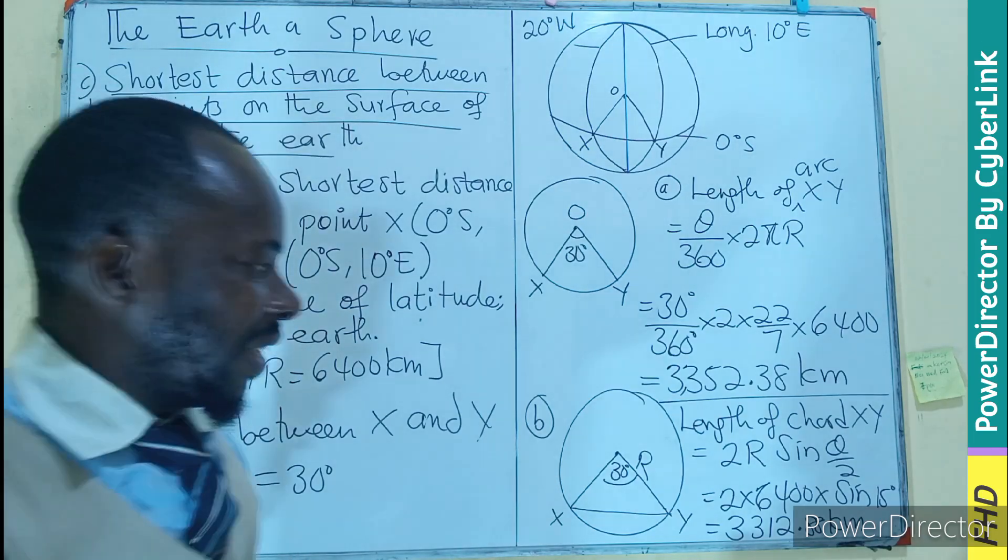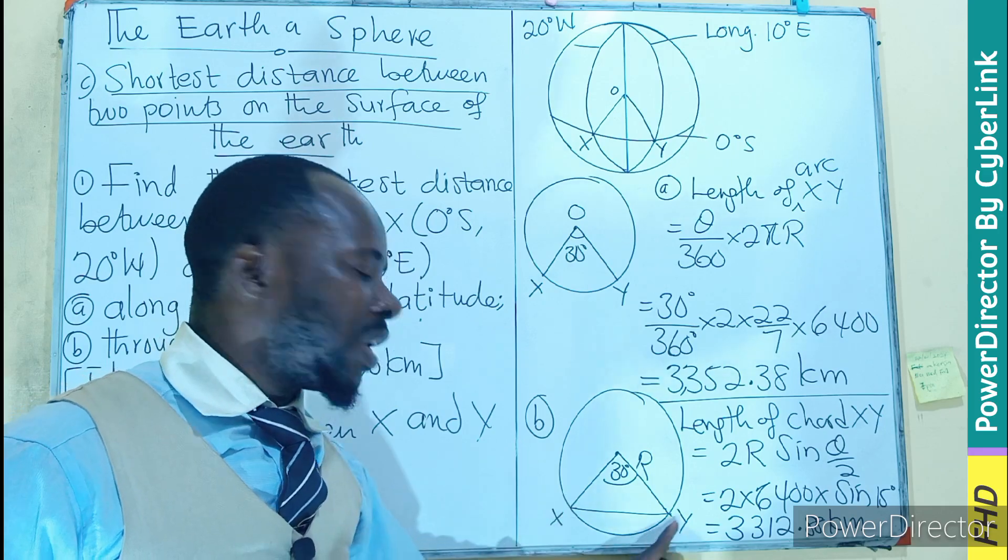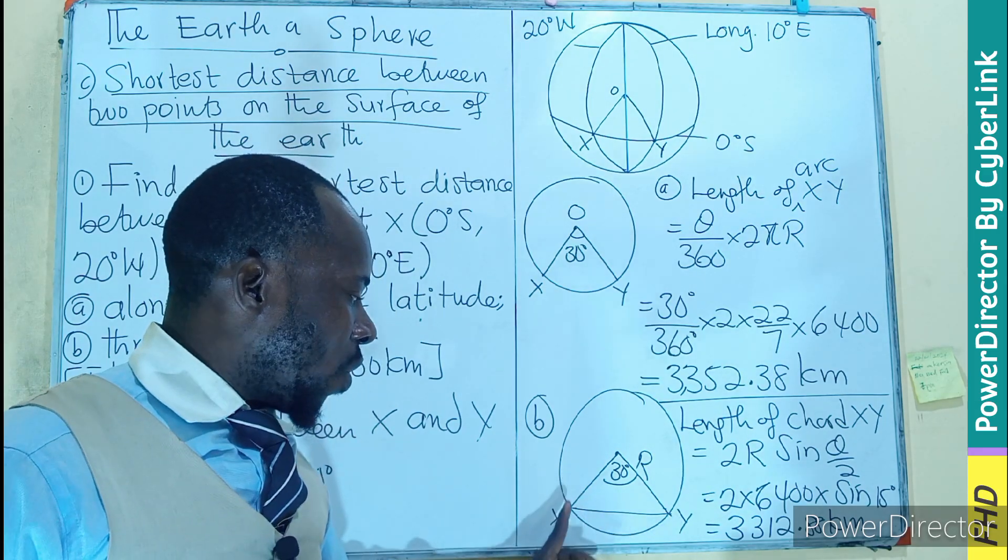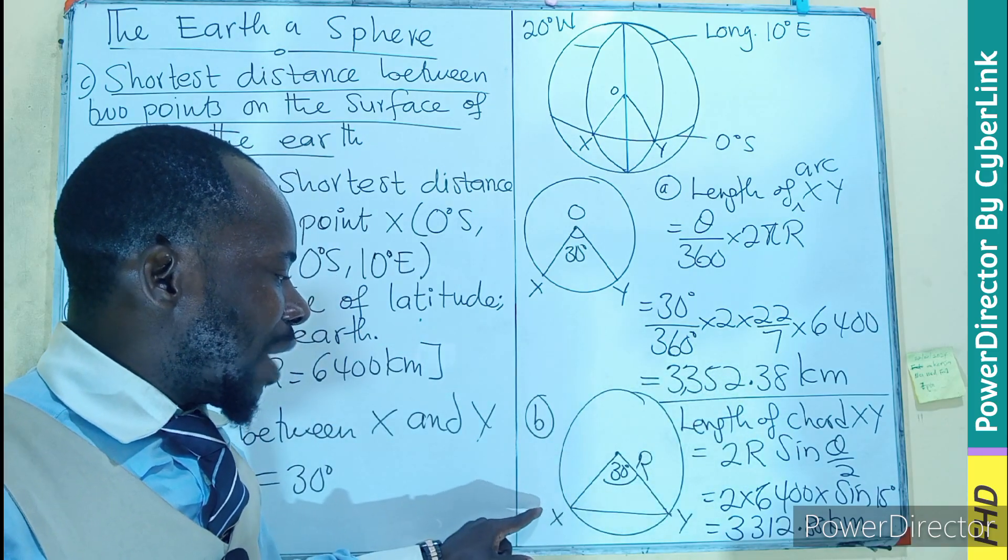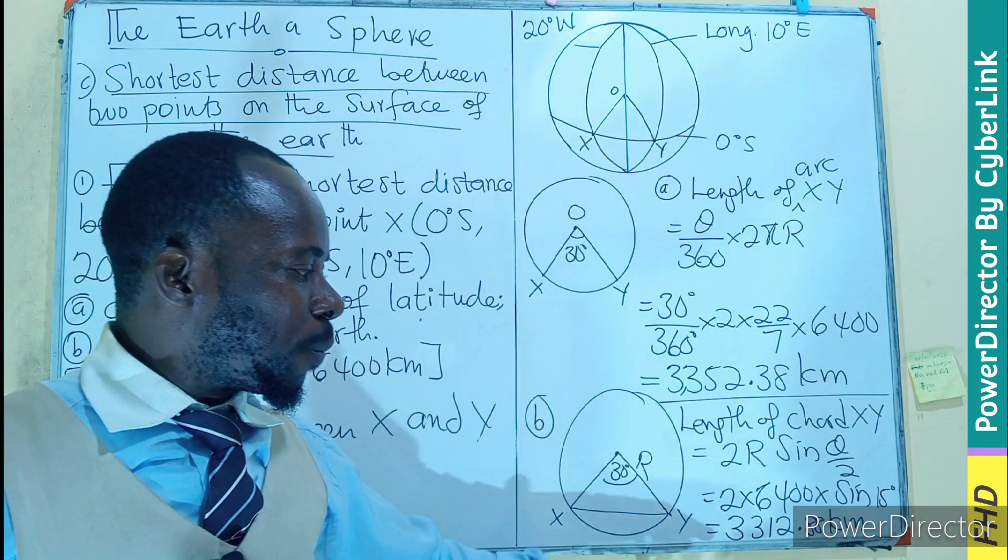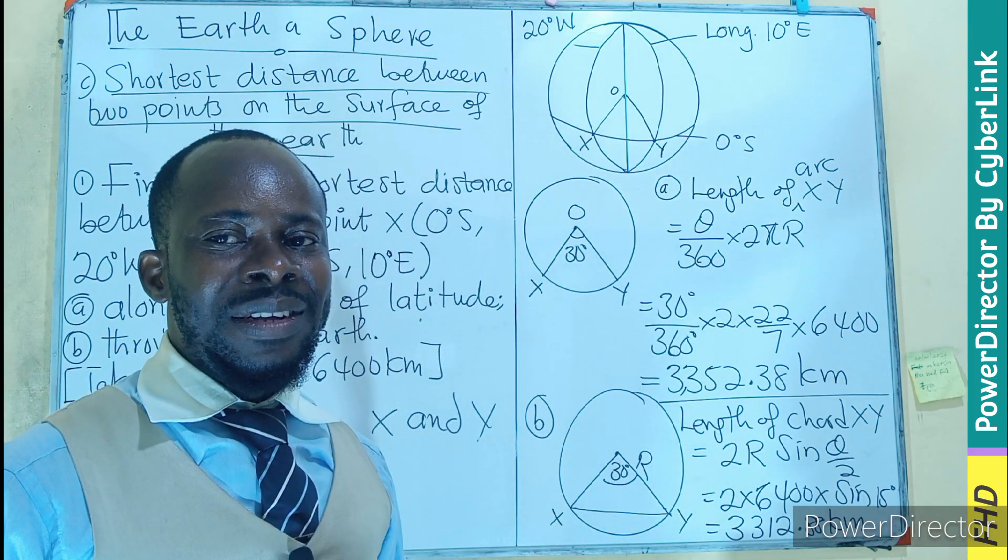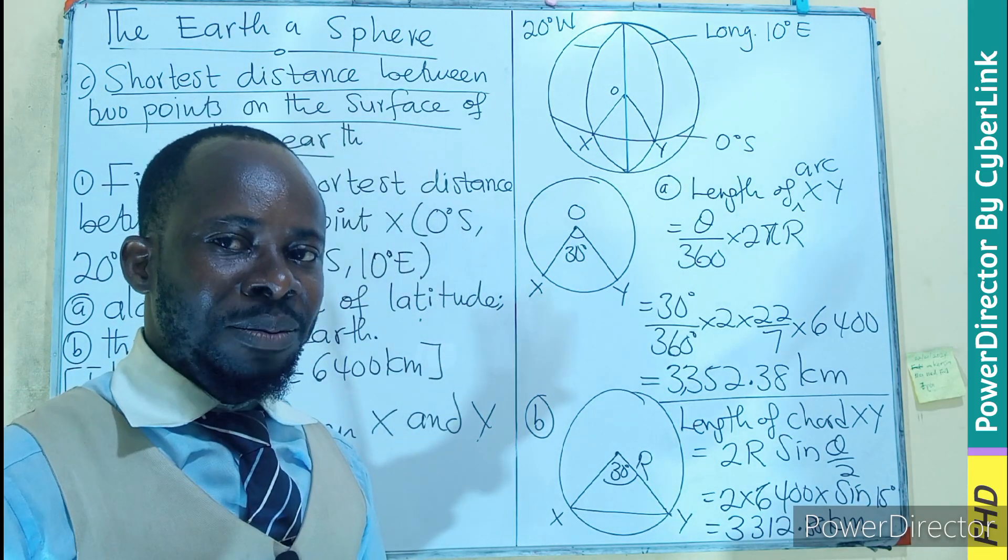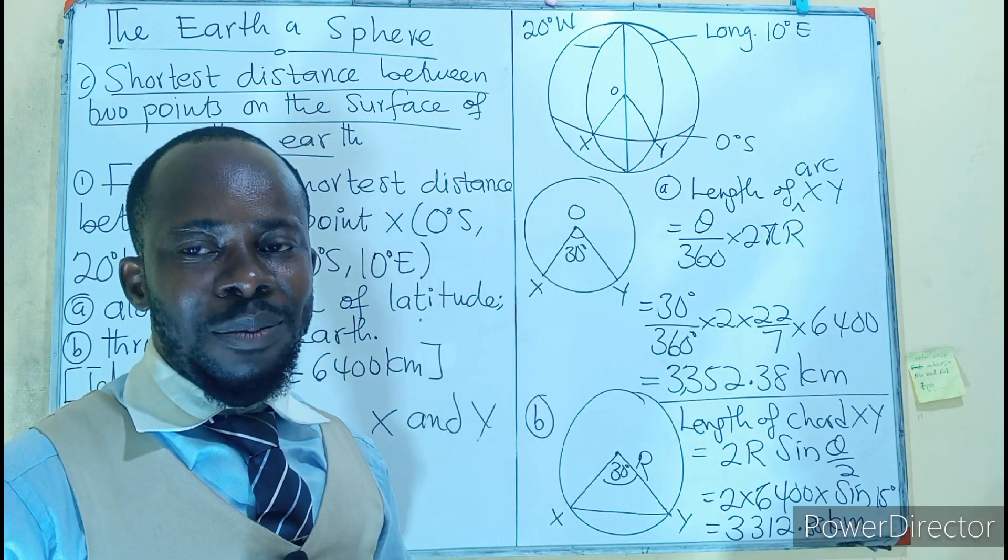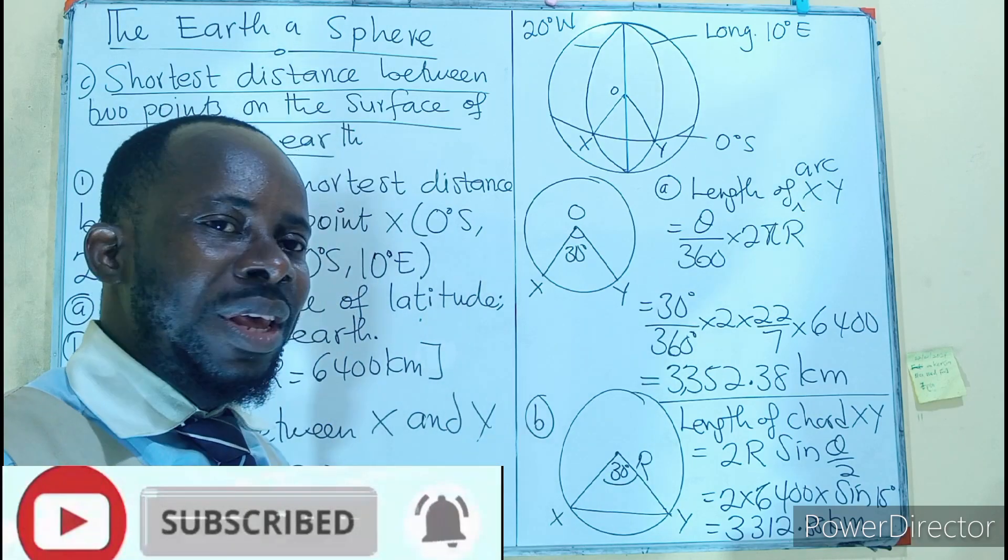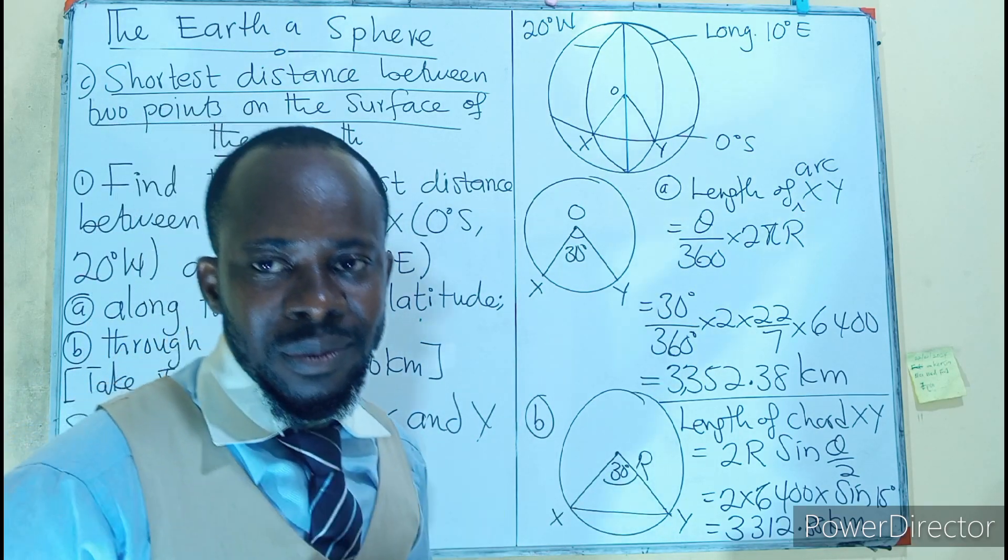So the distance. We can see that this distance is going to be shorter than moving along the latitude. On the latitude, you have 3352.38. On the chord, which is passing through the Earth, you'll be finding 3312.88 kilometers. I believe the concept is grasped. Like, share, comment, and subscribe. Come back for episode number 4 where we pick different aspects of this.